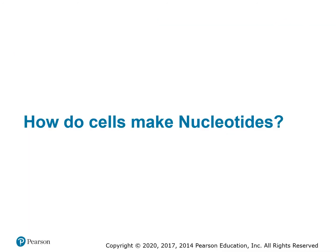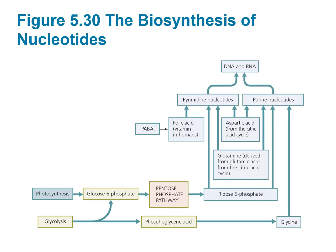How do cells make nucleotides? Ultimately we're trying to make DNA or RNA. It starts with glycolysis, which forms glucose-6-phosphate at step one, which then feeds into the pentose phosphate pathway, which forms ribose-5-phosphate, which eventually is used to form our DNA or RNA. Another process flows through glycine — an amino acid — which forms a portion of the purine nucleotide.